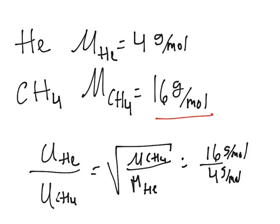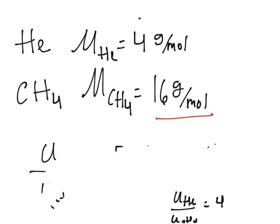So U-He over U-CH4, so here's our methane, is 4. Now you just have to solve for one.